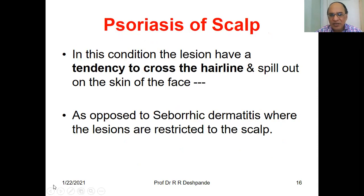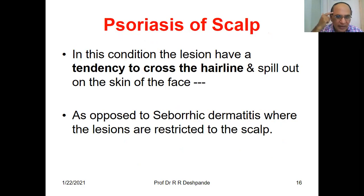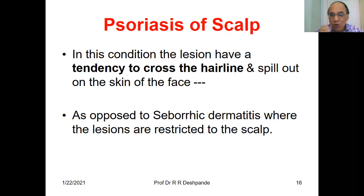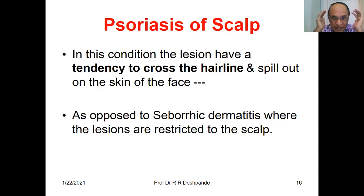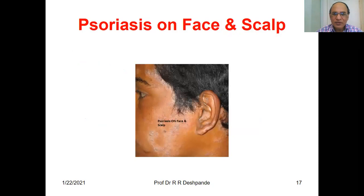Psoriasis on the scalp has a tendency to cross the hairline and spill out onto the skin of the face — it is not only restricted to the scalp. In seborrheic dermatitis, for differential diagnosis, only the scalp is affected — no facial involvement. But in psoriasis, the scalp lesion comes out onto the face — it crosses the scalp margin. Can you see? The psoriasis lesion has crossed the hairline and is on the face as well. This is most important.